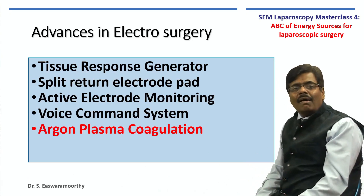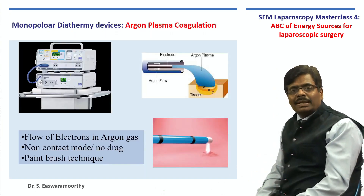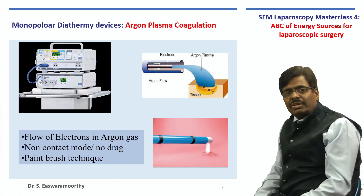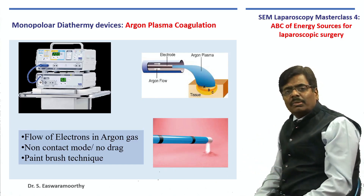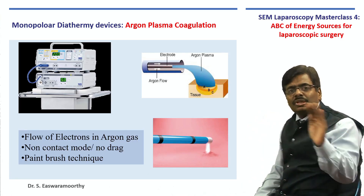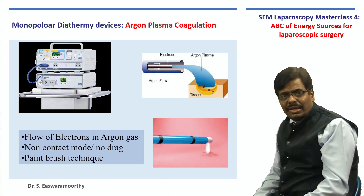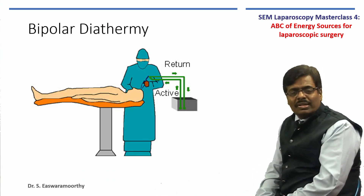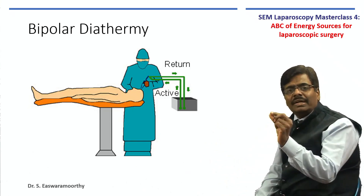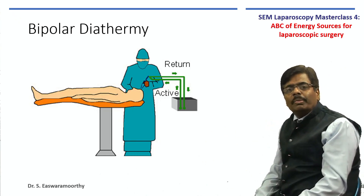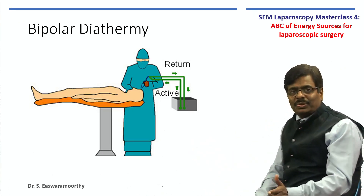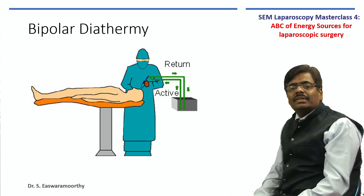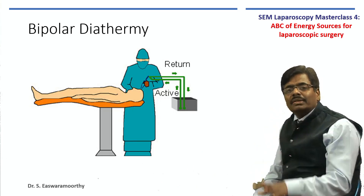The next important electrical device is argon plasma coagulation — not necessarily used in laparoscopy — where thanks to the argon plasma, electrons flow with the least resistance without any drag, like a paintbrush technology. It is mainly used in liver surgery for surface coagulation when there is oozing. Bipolar diathermy is now increasingly used. The advantage of bipolar is that both the active and indifferent electrodes are the two jaws of the instrument, so the patient is not part of the circuit — making it very safe. However, conventional bipolar is not versatile; it cannot do cutting, and instruments tend to stick.